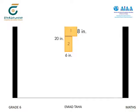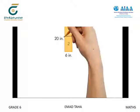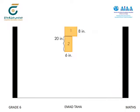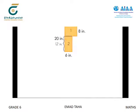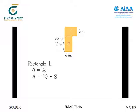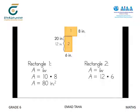The length and width of the top rectangle and the width of the bottom rectangle are given. These students know that they can subtract given dimensions to find the side length of the bottom rectangle: 20 inches minus 8 inches is 12 inches. Then these students find the area of each rectangle. The area of the top rectangle is 80 square inches, and the area of the bottom rectangle is 72 square inches.